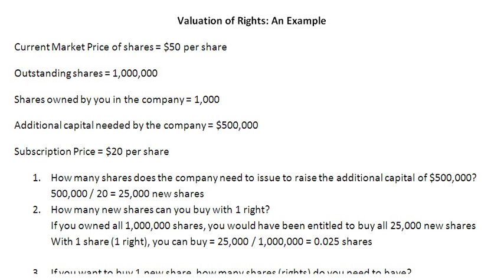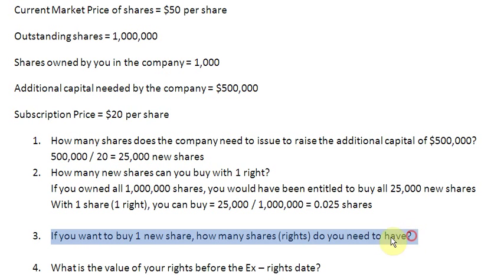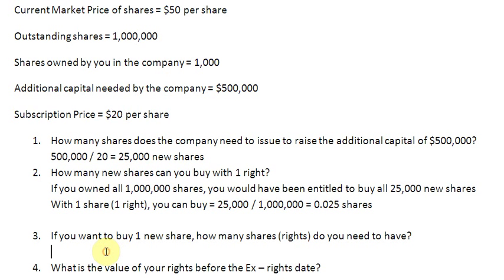We can also look at this in reverse: if you want to buy one new share, how many rights do you need? We take the reciprocal of 0.025, which gives us 40. So if you have 40 rights, you will be entitled to buy one new share in this rights issue.